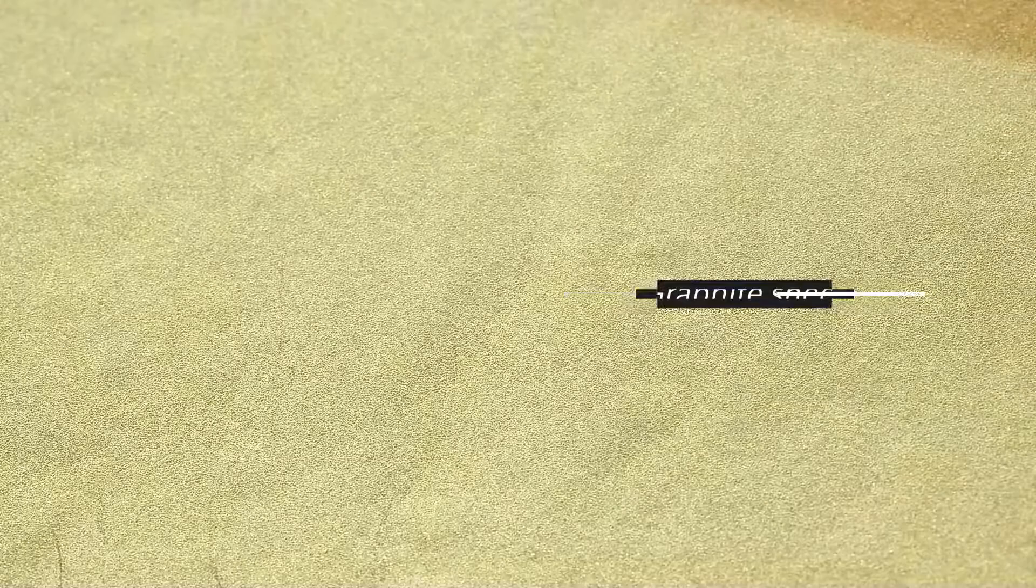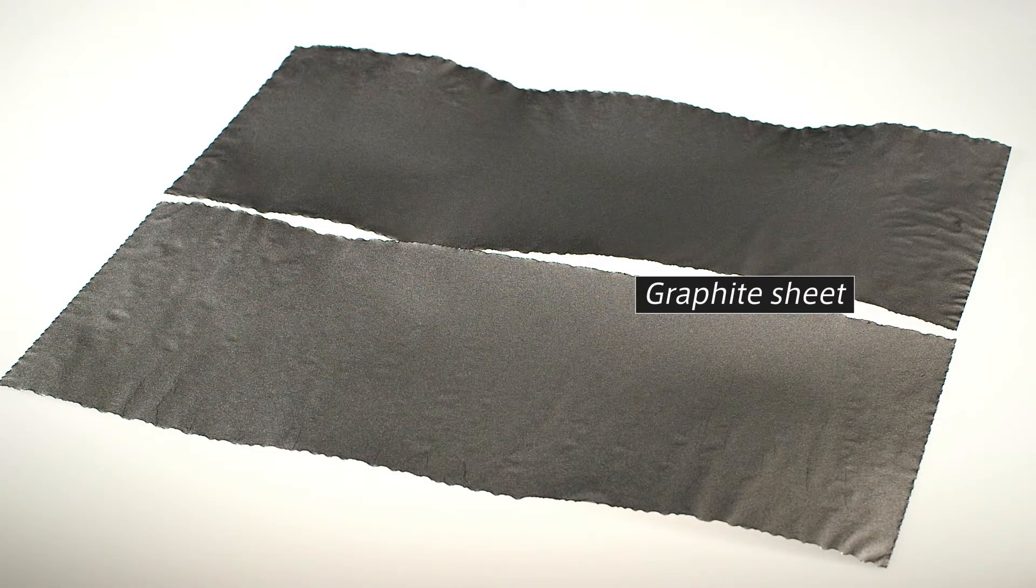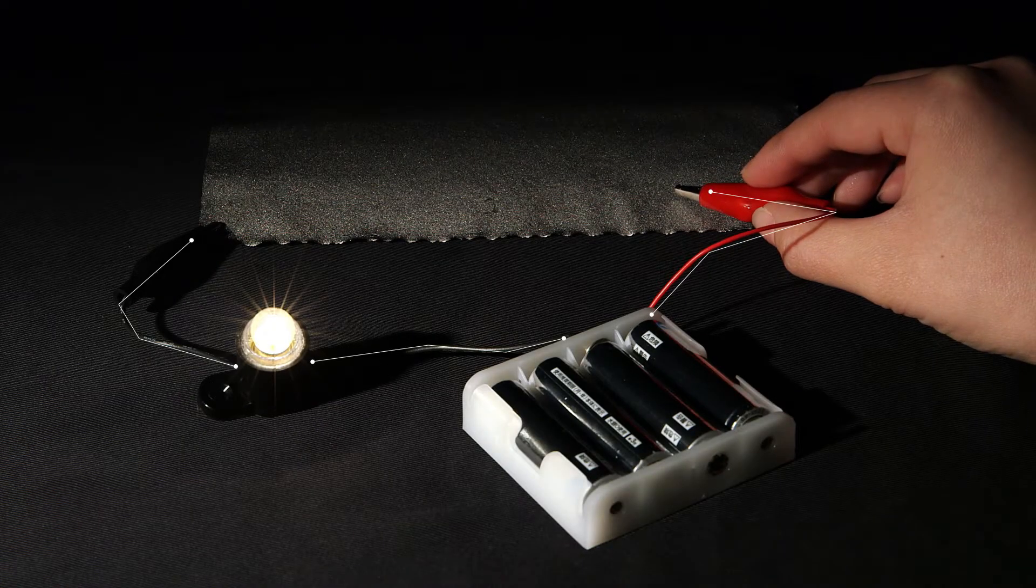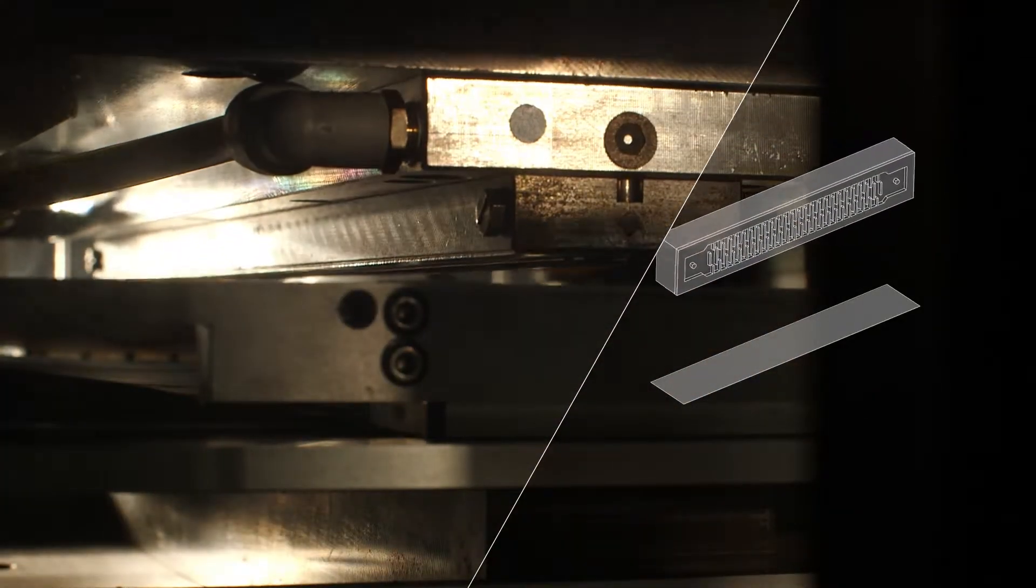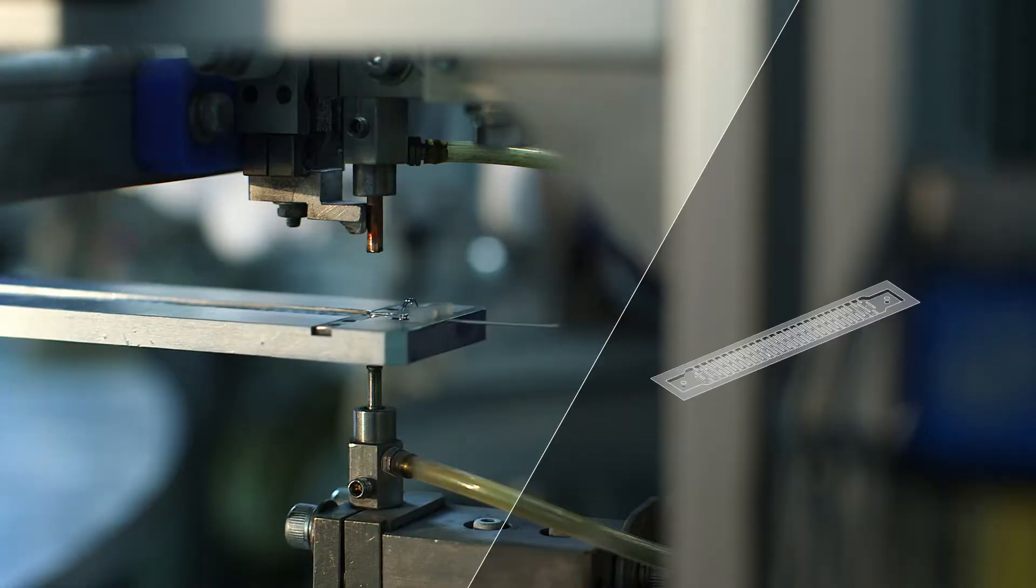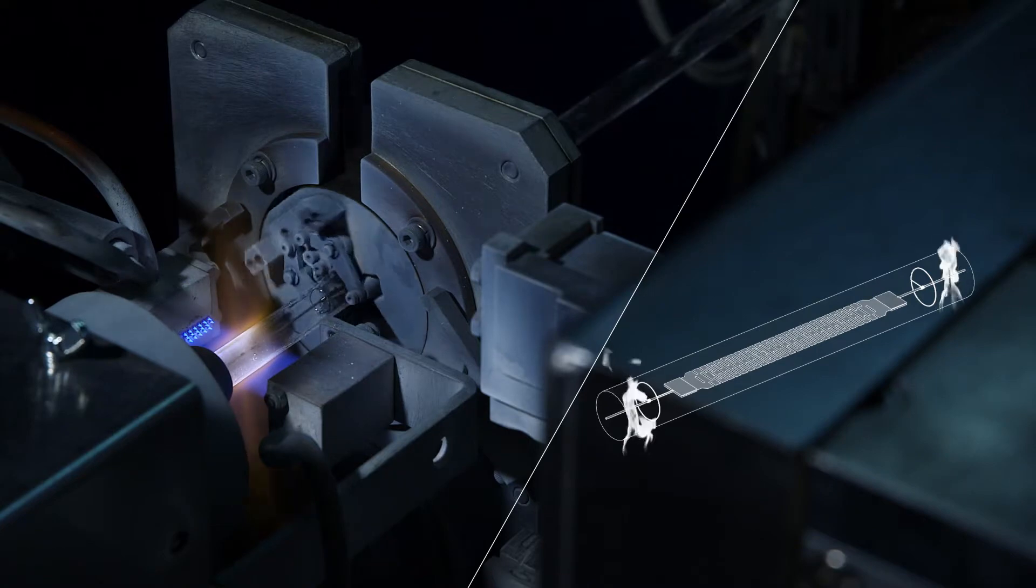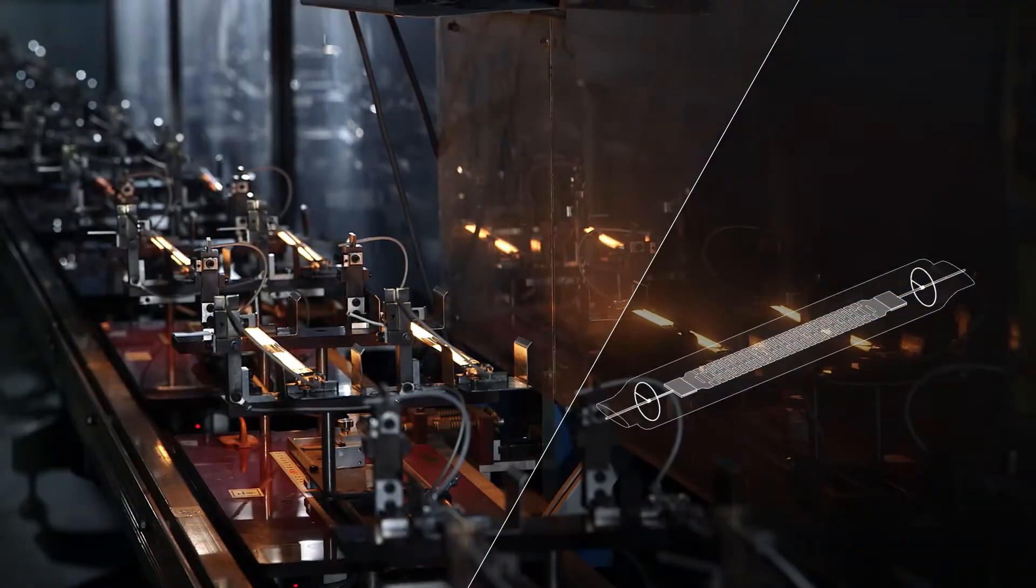The film undergoes pyrolysis and is crystallized to form it into a graphite sheet. At this stage, electricity can pass through the sheet. Using original technology to introduce a slit in the graphite sheet to make it more difficult for the electricity to flow changes it into far-infrared graphite that generates heat at a high temperature.